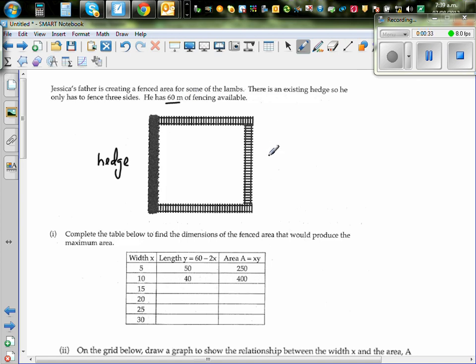So if the length, suppose the width, so this is the width. The width is given to be x. So the remaining length would be 60. The length would be, so let's take the width as x. So this is the width. So the width is x here, so here also it will be x. So if this is x plus x, this would be 60 minus 2x. That's already given in this table.